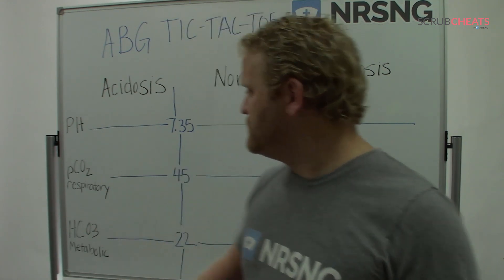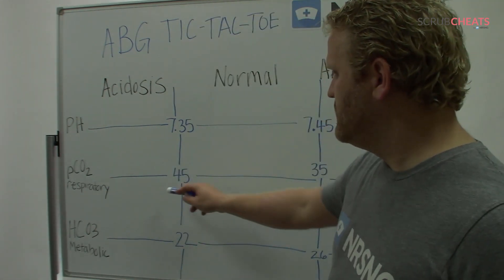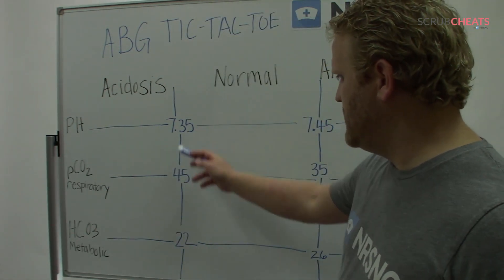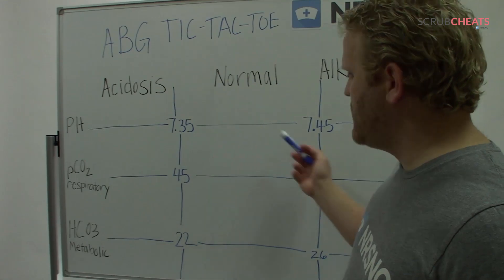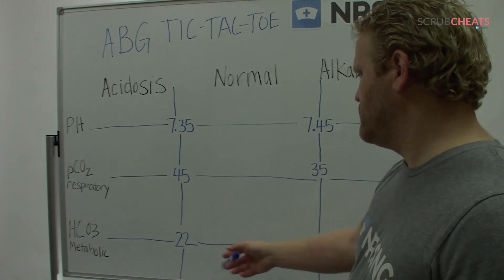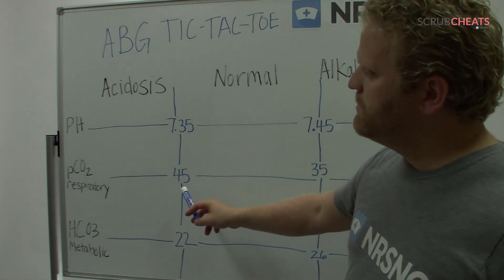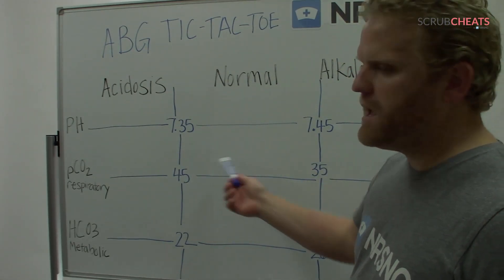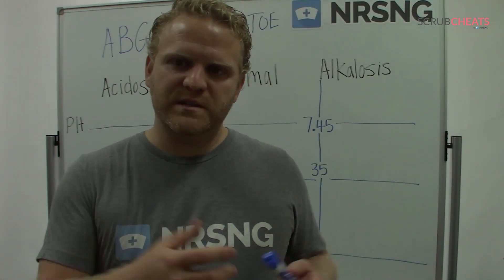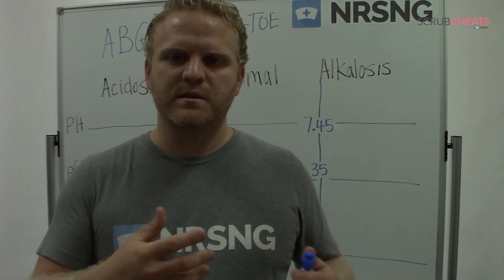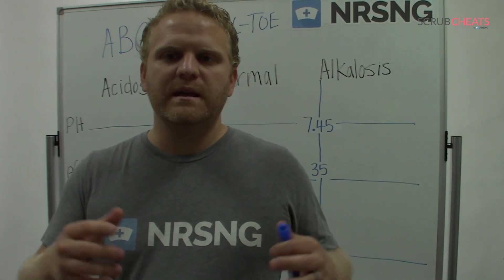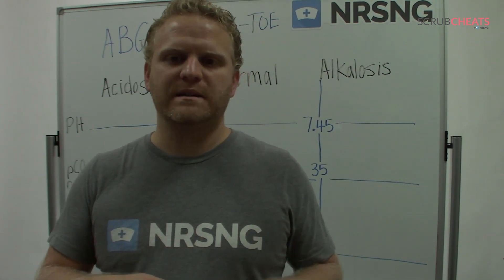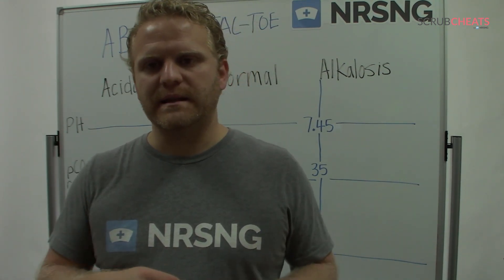It's important to note that PCO2 is reversed. For pH, we have it from low to high. For HCO3, we also have it from low to high. But for PCO2, we have it high to low, because PCO2 is going to be the opposite — a high PCO2 is actually acidic.